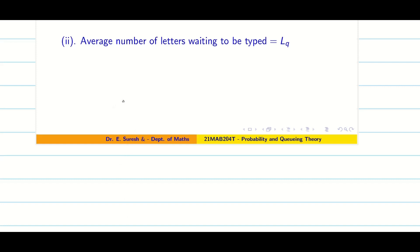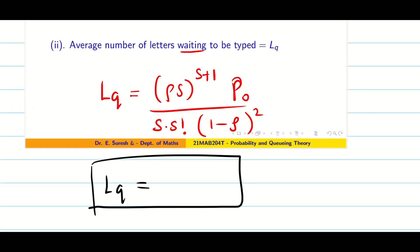The next question asked to us is average number of letters waiting. When it's waiting and then it is typed, it is going to be Ls. If it is simply waiting, it is going to be Lq. So we know the formula for Lq. It is going to be rho into s whole power s plus 1 capital P₀ divided by s into s factorial 1 minus rho whole square. So now substituting the corresponding values, we can find the solution. By substituting and simplifying, we get the following value for Lq: 3.5108. When we round off, it is going to be 4.